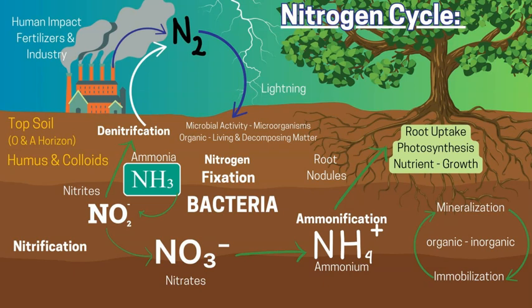We can also include the impact and changes that occur to the cycle due to human activity, most commonly through the burning and consumption of fossil fuels via cars, transportation, factories, and industries. Natural events like volcanic eruptions also add additional nitrogen to the atmosphere.